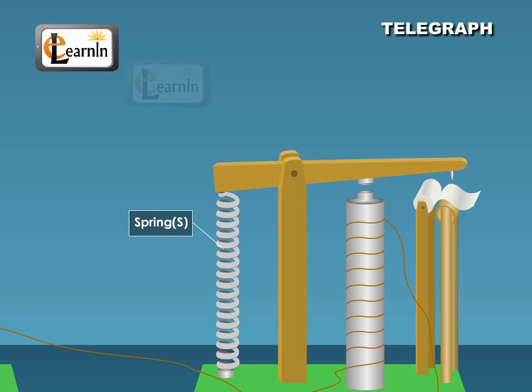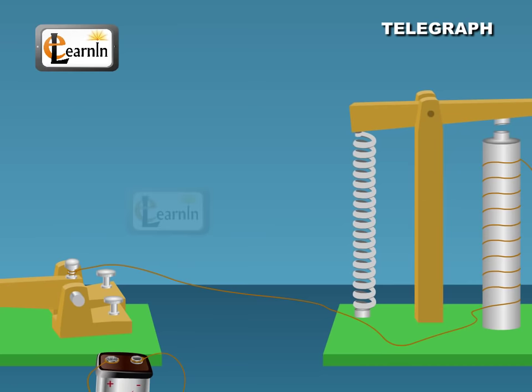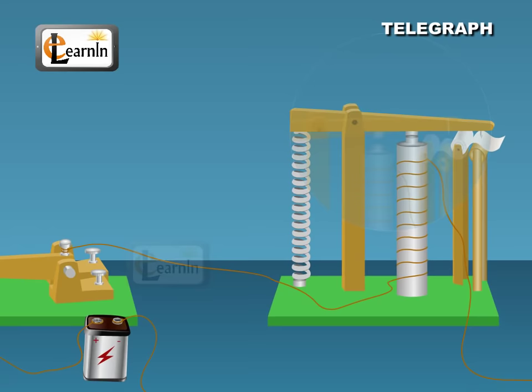Working: When the Morse key K is pressed, the circuit is completed through ground which is a conductor. The electromagnet attracts the armature A and it produces a sound, click, on striking the rod K2.